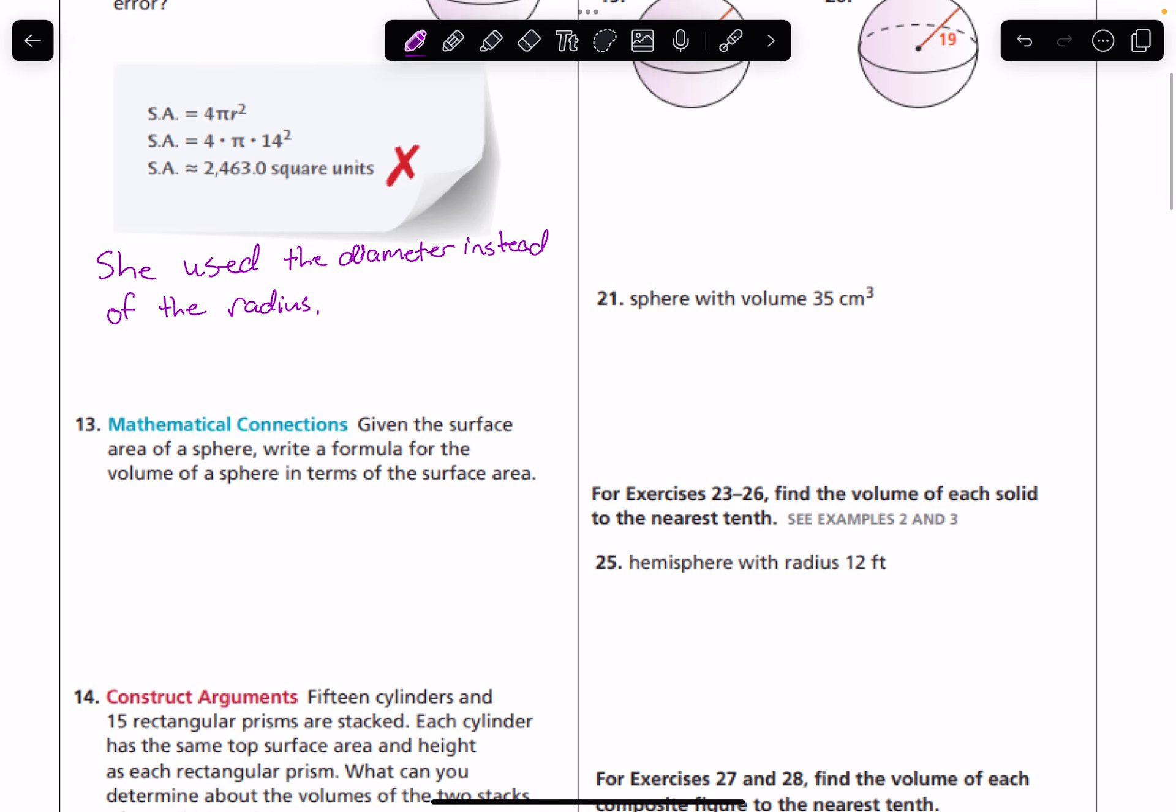Number 13, given the surface area of a sphere, write a formula for the volume of a sphere in terms of surface area. So if we think about that, we know the surface area is equal to 4πr². So how do we turn 4πr² into the volume formula of (4/3)πr³? We would have to change the 4 into a 4/3 by dividing by 3. And then instead of r², there's an r³. So we would take the surface area formula, divide by 3, and multiply by another r, so that now that expression would be r³. So that would turn our surface area formula into the volume formula.